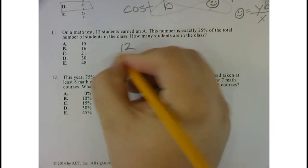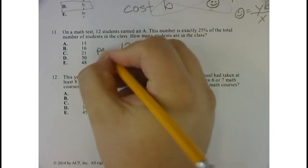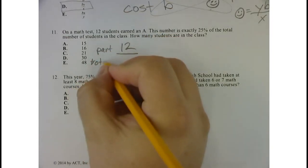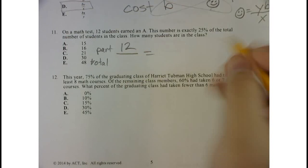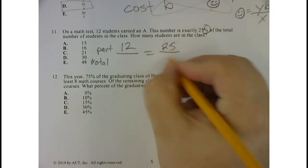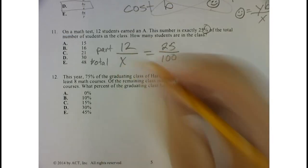12 is the part, and they want to know the total number. That's equal to 25%, which is the same as 25 over 100. We don't know what the total number of students are.